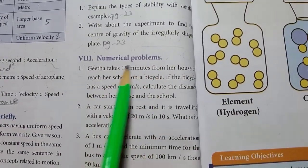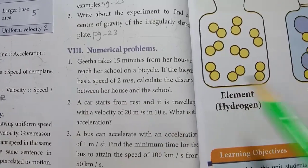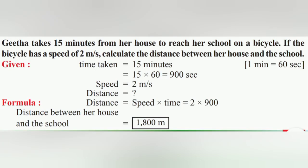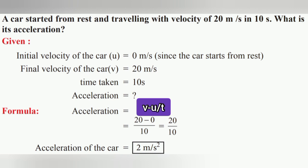Roman numeral 8: Numerical problems. Please copy into your classwork notebook. 1st one — distance between her house and school equals 1800 metres. 2nd one — a car started from rest and travelling with a velocity of 20 metres per second in 10 seconds; what is its acceleration?